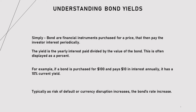Understanding bond yields. Simply, bonds are financial instruments purchased for a price that then pay the investor interest periodically. The yield is the yearly interest paid divided by the value of the bond — this is often displayed as a percentage. For example, if a bond is purchased for $100 and pays $10 in interest annually, it has a 10% current yield. Typically, as the risk of default or currency disruption increases, the bond's rate increases.